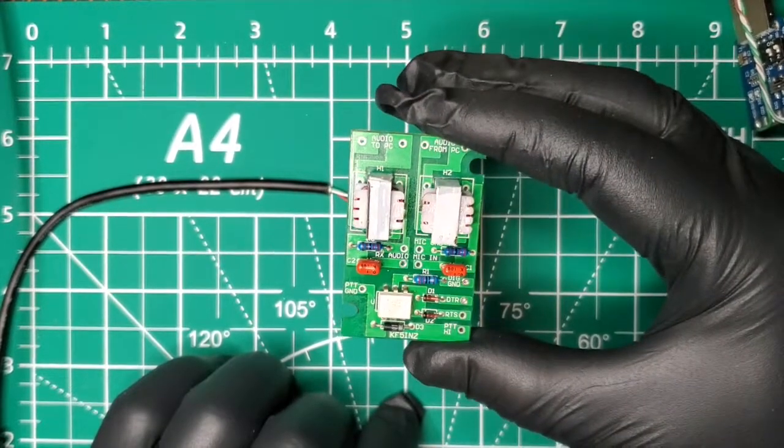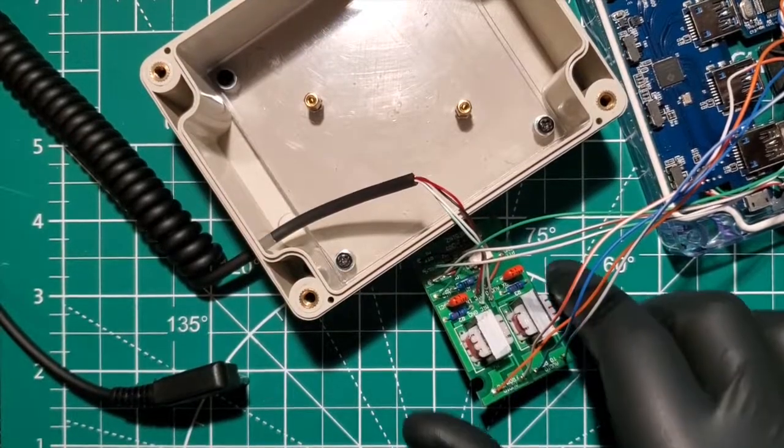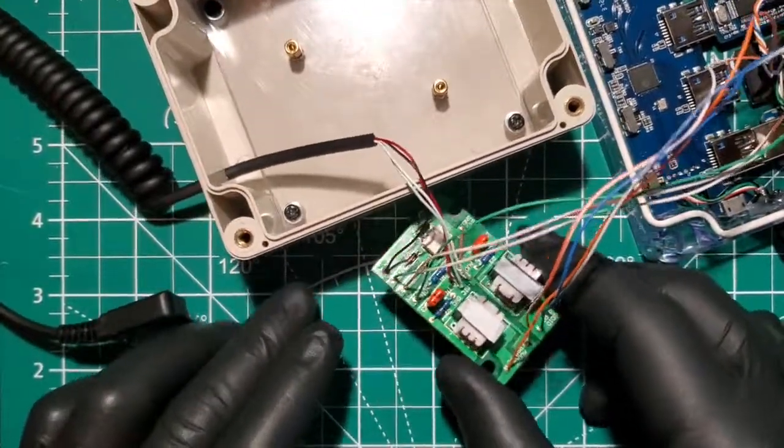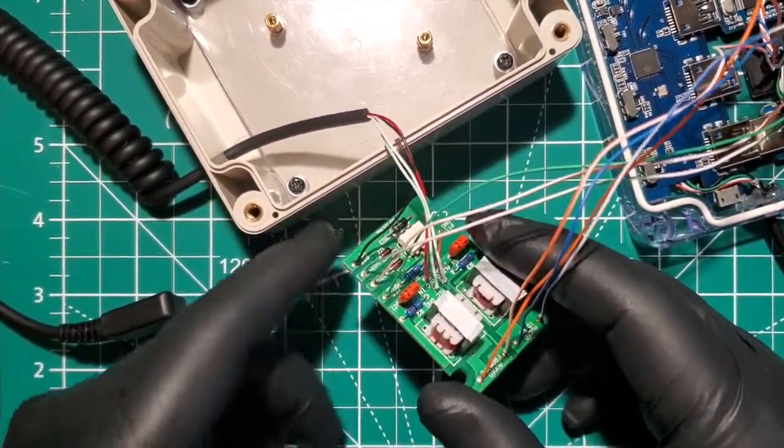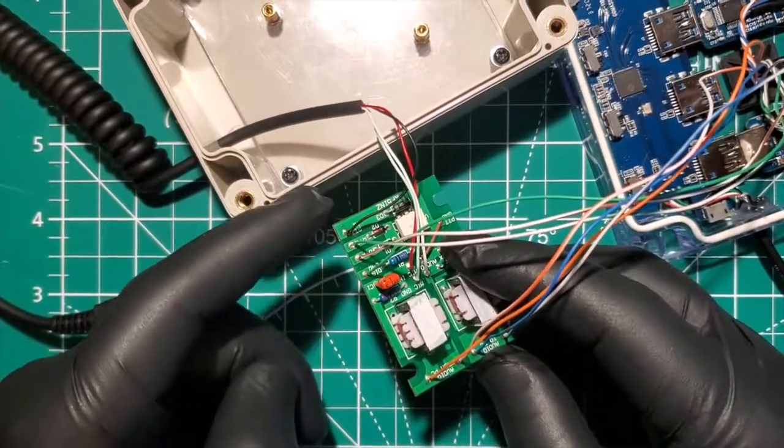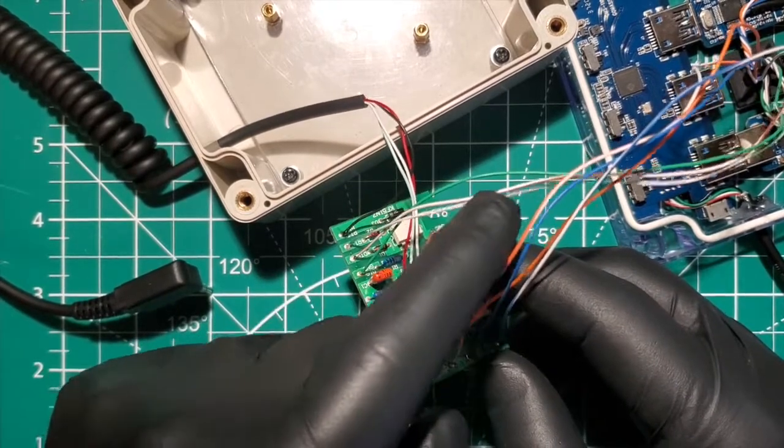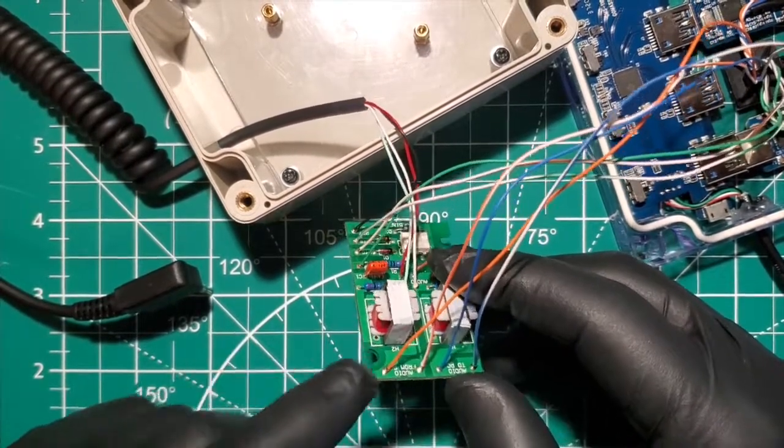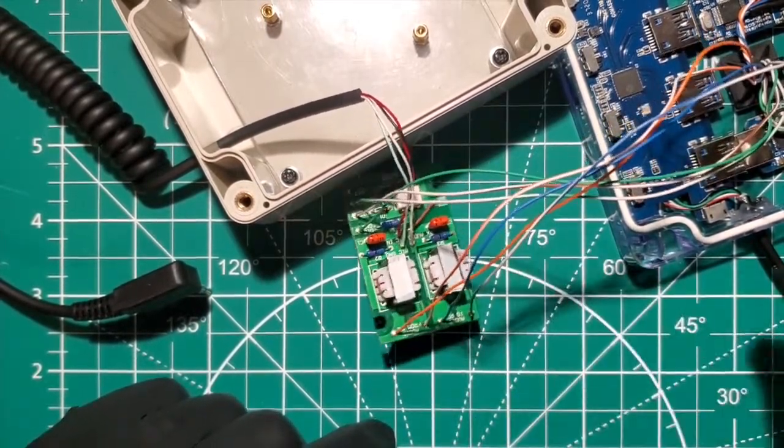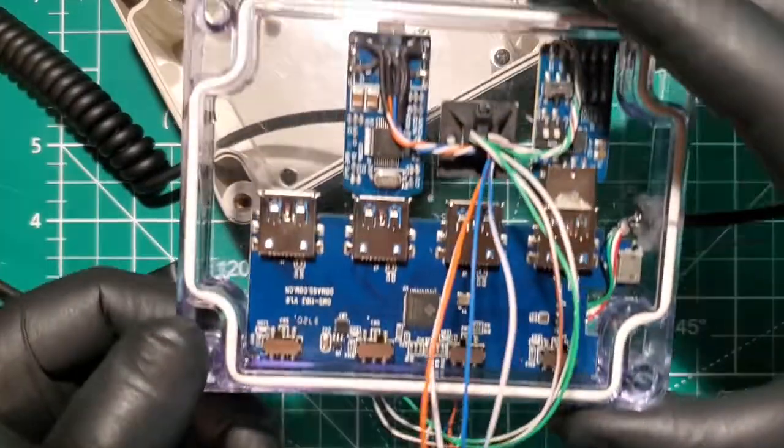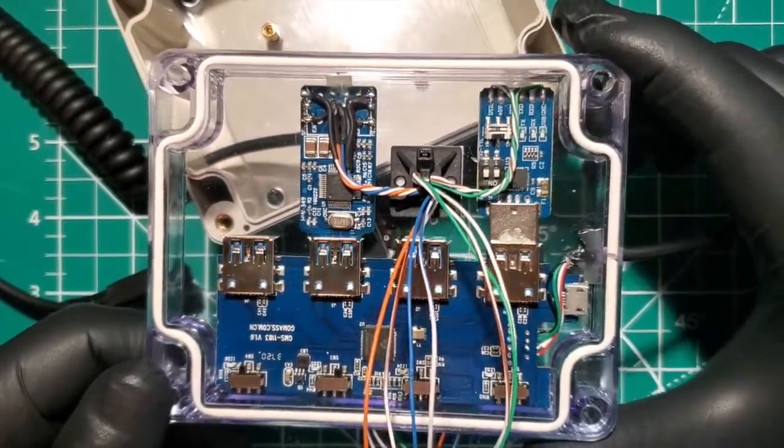Now we're back. I went ahead and soldered everything up here. Like I said, on my website I have the wiring diagram for this. We have our cable hooked up going to the radio, this is going to the USB serial, then these are going to and from the computer. If we look over here, here's a glimpse of how I did that.